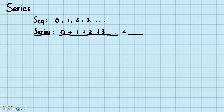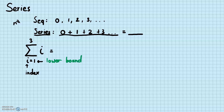Before we go into series, let me introduce a few new notations. The most basic notation associated with series is the summation notation — it's a capital sigma. The notation has an index i, a lower bound at the bottom where we start, and an upper bound at the top where we end.